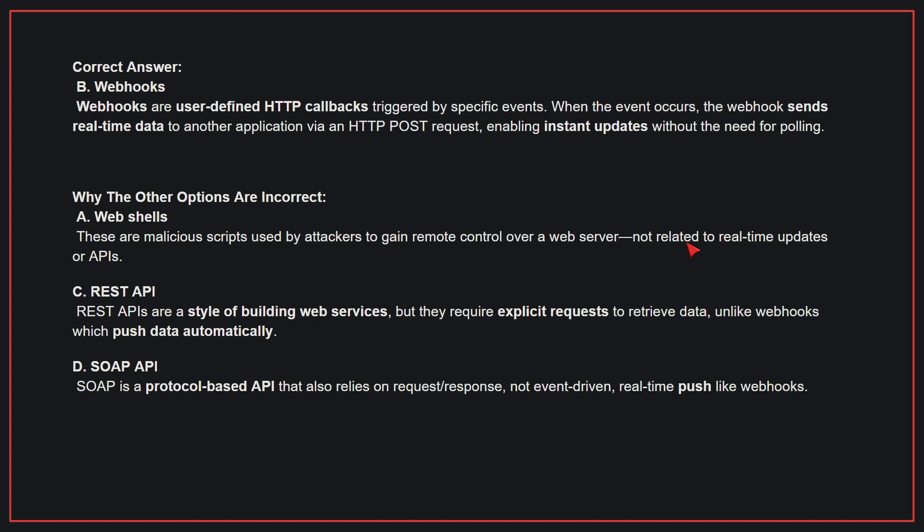Why the other options are incorrect: A, web shells — these are malicious scripts used by attackers to gain remote control over a web server, not related to real-time updates or APIs. C, REST API — REST APIs are a style of building web services, but they require explicit requests to retrieve data, unlike webhooks which push data automatically.